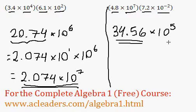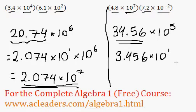Again, the answer is not yet in scientific notation. So I'm going to make 34.56 equivalent to 3.456 times 10 to the 1 times 10 to the 5. And why again 10 to the 1? Because I took this decimal point over to the left here by one jump, right?